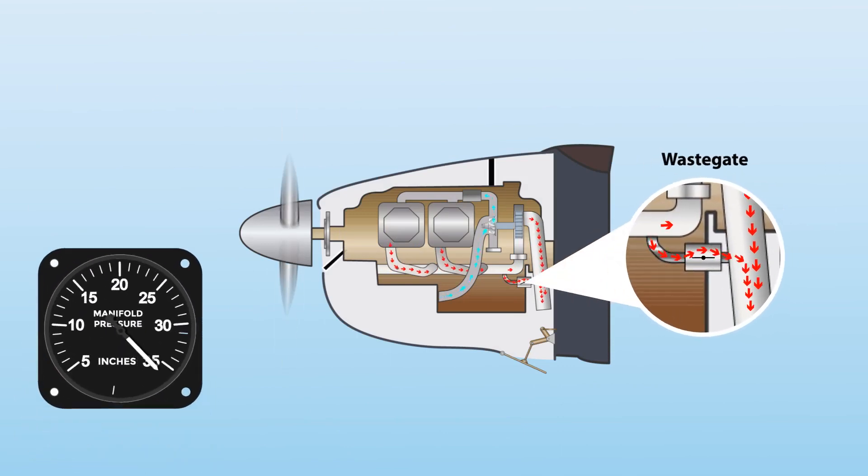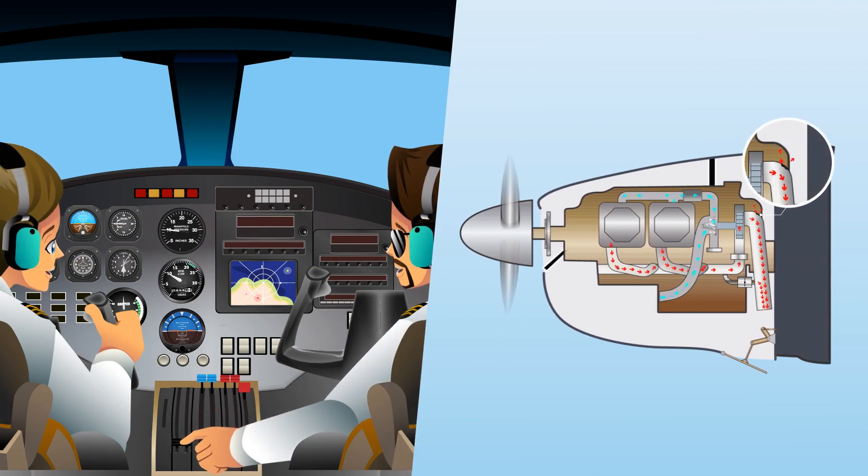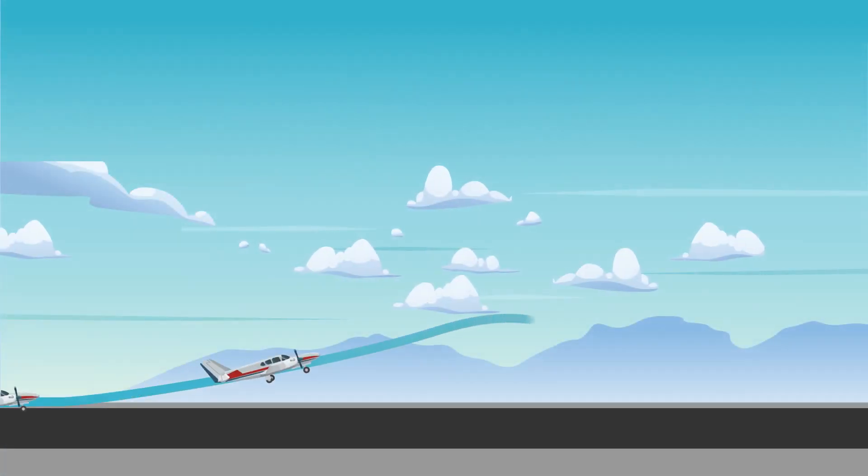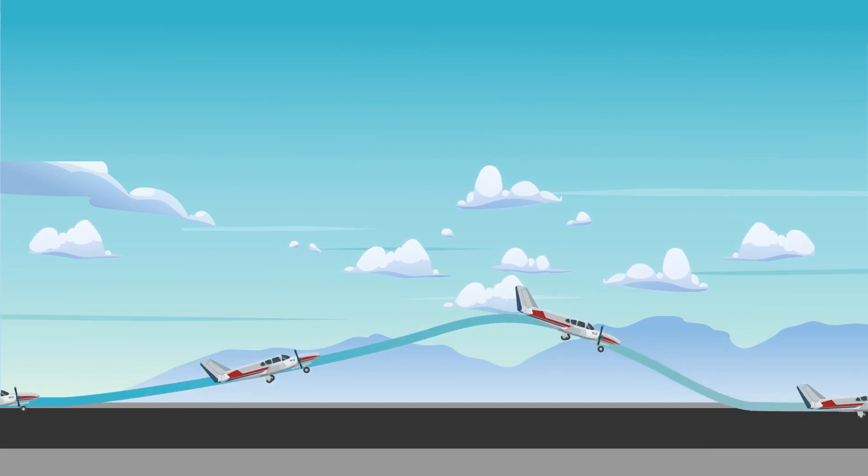Underboost is when the wastegate remains open and does not provide enough boosted air to the engine. Underboost can also occur if there is an exhaust leak, creating a hazardous situation. The pilot should shut down the engine or if continuing to operate the engine, use the lowest power setting and land as soon as practicable.